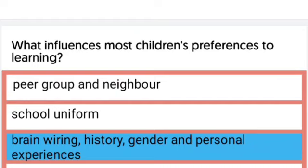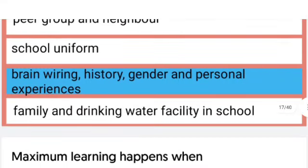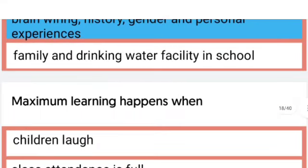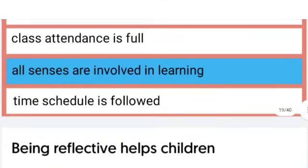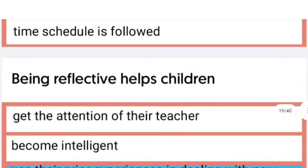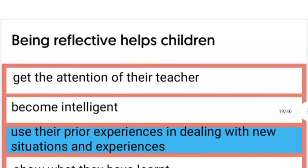Maximum learning happens when all senses are involved in learning. Being reflective helps children use their prior experiences in dealing with new situations and experiences.